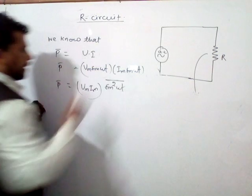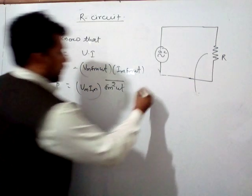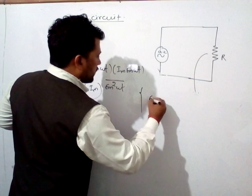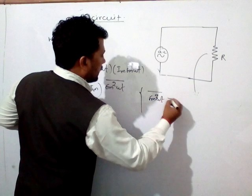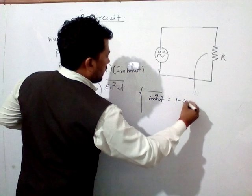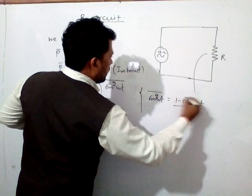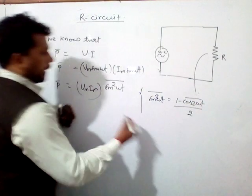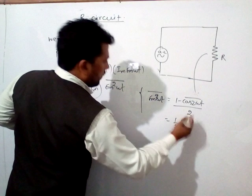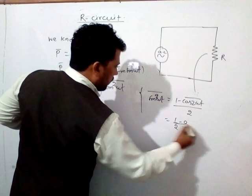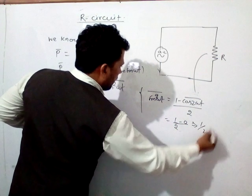The average value of sin²(ωt) uses the formula: sin²(ωt) equals (1 minus cos(2ωt)) divided by 2. The average value is 1/2, because the average of cos(ωt) is zero.